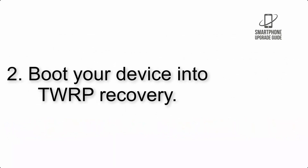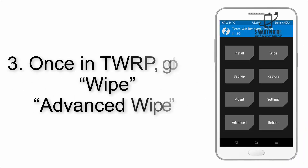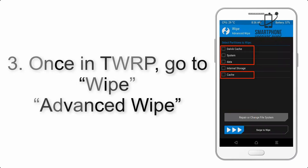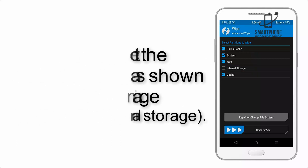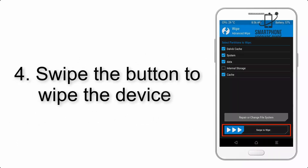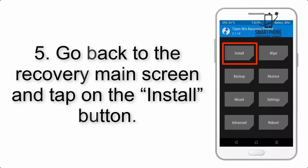Step 2: Boot your device into TWRP recovery. Once in TWRP, click on Wipe, then Advanced Wipe, and select the checkboxes as shown in the image, excluding internal storage. Step 4: Swipe the button to wipe the device.